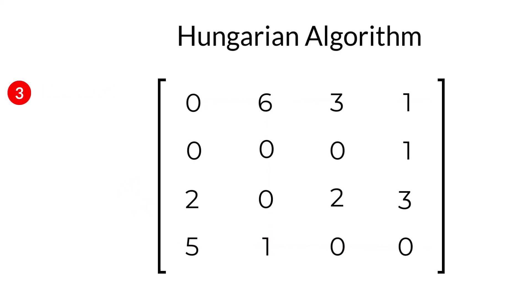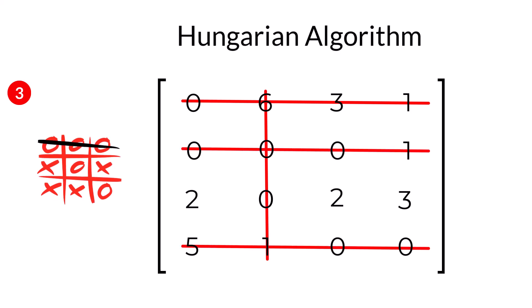Our additions and subtractions are all complete. So, it's time to play another round of tic-tac-toe. This time, I needed four lines to cover all the zeros, a combination of horizontal and vertical. And, that is the same as the number of allocations in my problem. So, the game is up. If fewer lines were required, step three would be repeated until the quantity of lines matched the allocations.